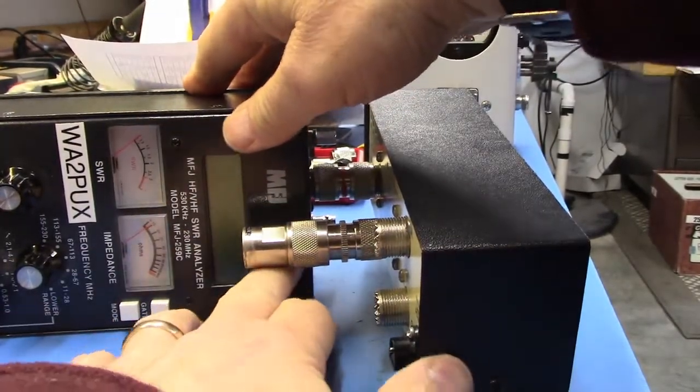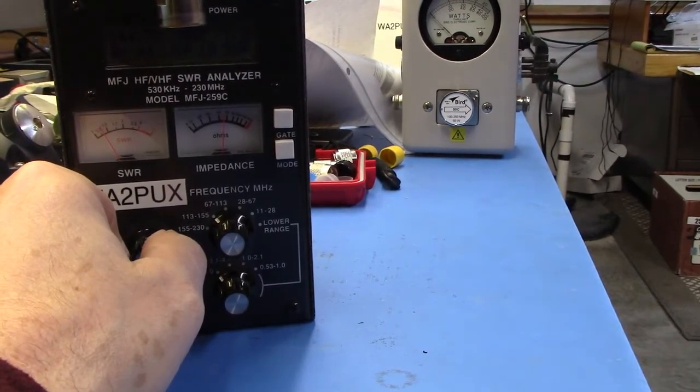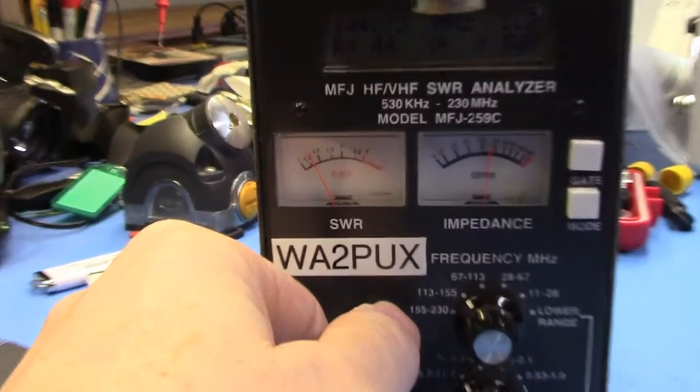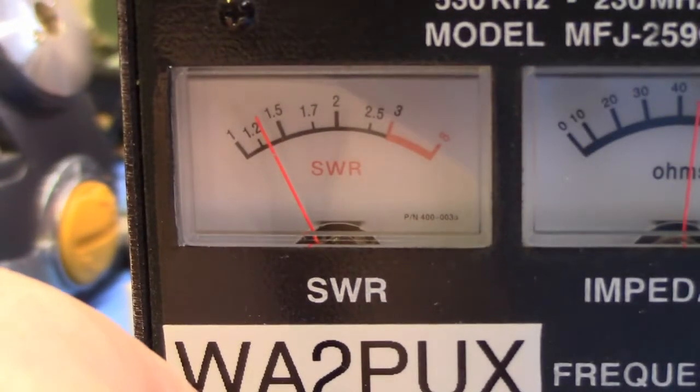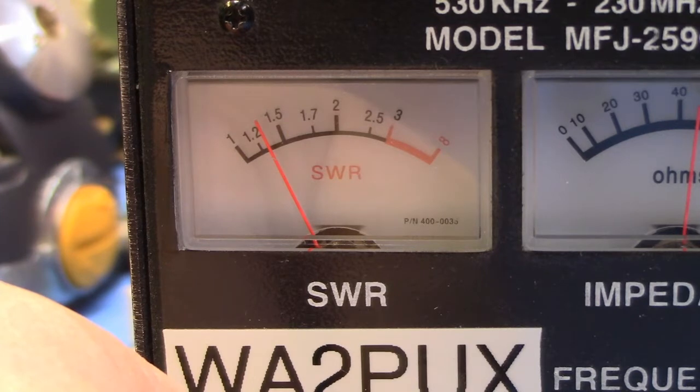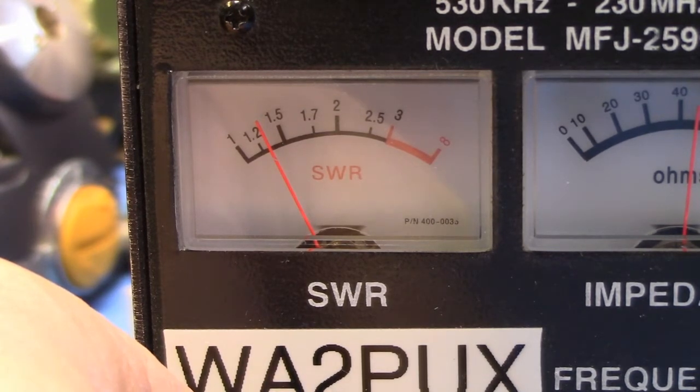Now we turn on the antenna analyzer and I'm going to sweep through the two meter band. If you notice here at 144 megahertz, it's sitting right around 1.3 to 1, and I sweep up through 145, 146, 147, to 148 megahertz.